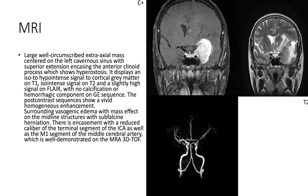Taking a look at the MRI, we see that there's a large well-circumscribed extra-axial mass centered on the left cavernous sinus. On post-contrast imaging, we see homogenous enhancement. There's also surrounding vasogenic edema with mass effect and subfalcine herniation.